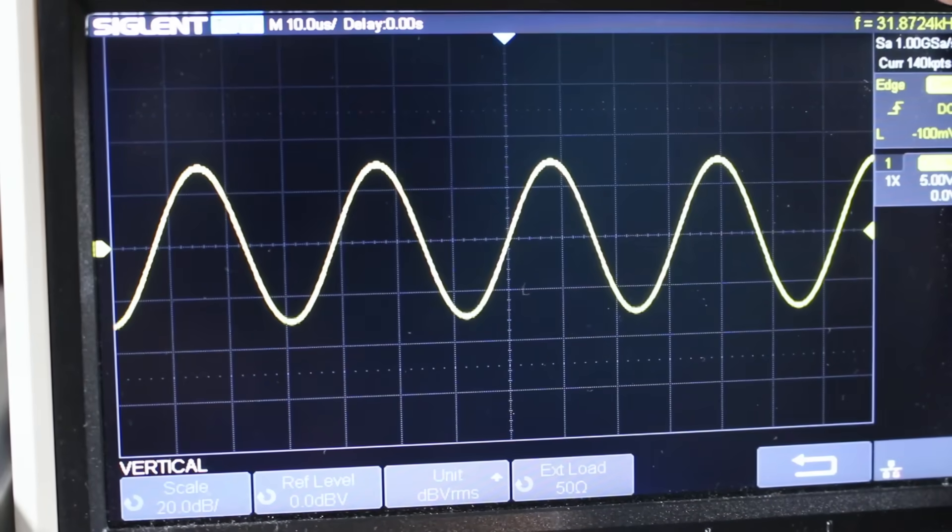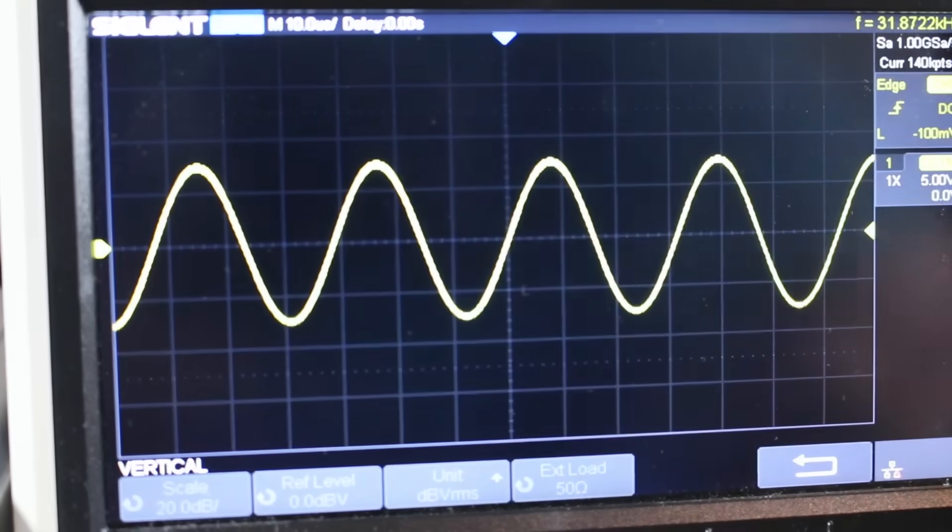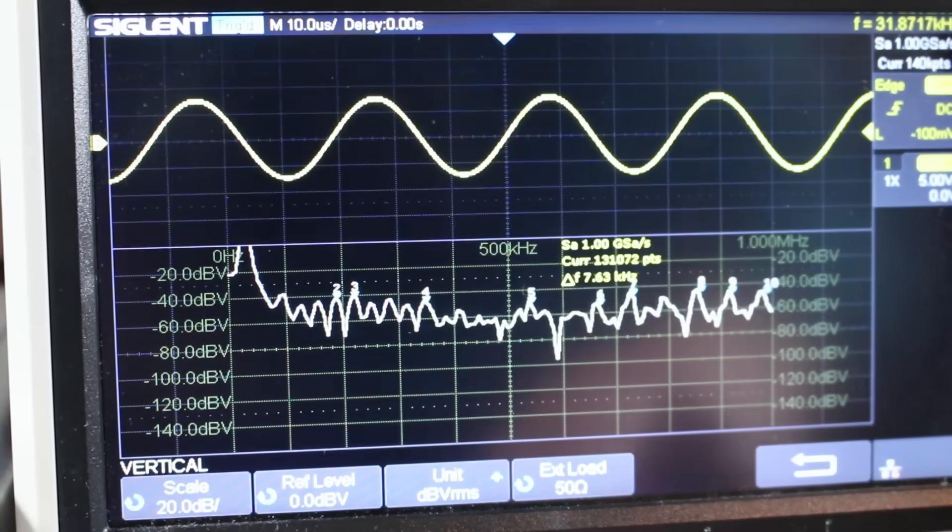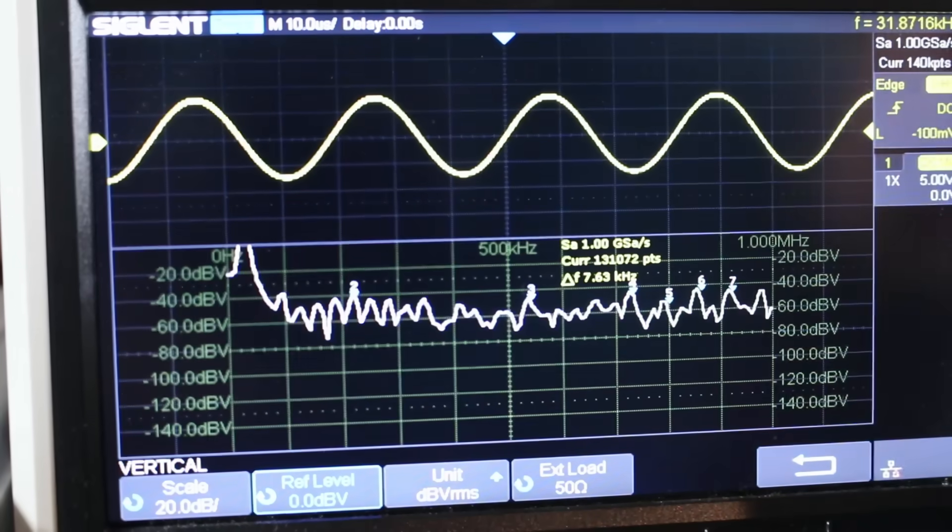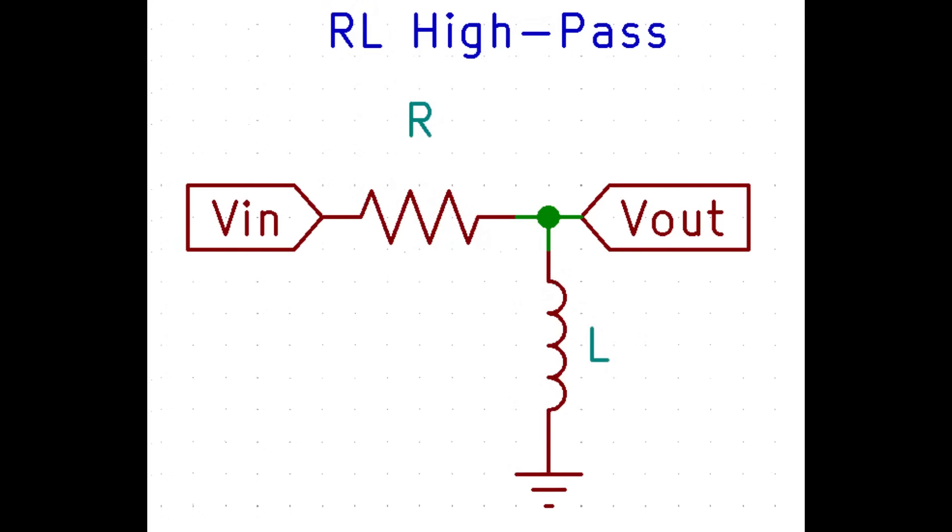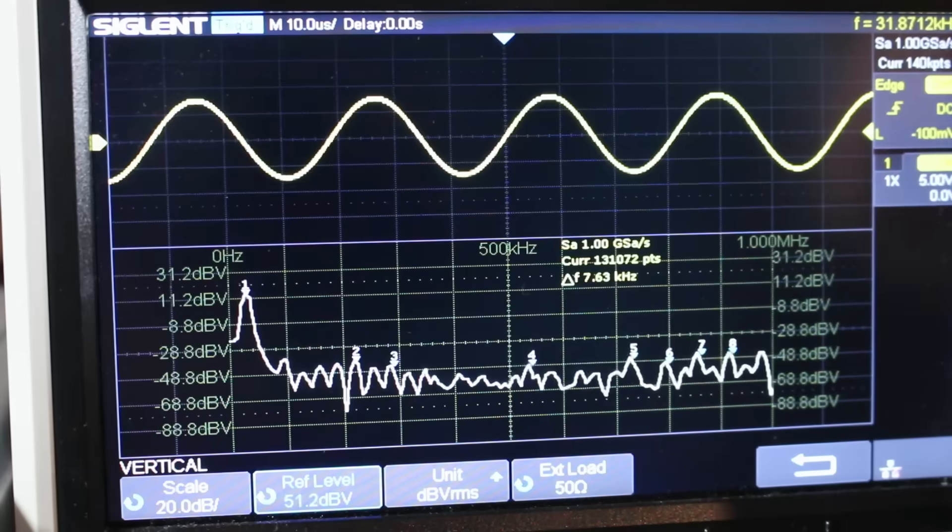And as one final note regarding phase shift oscillators, you don't have to use RC low-pass filters. You can really use anything that has a phase shift. You could use an RC high-pass filter or an RL filter. You may also have four filter stages instead of just three. The possibilities are seemingly endless.